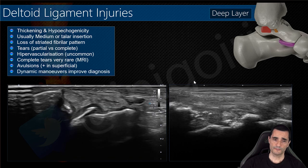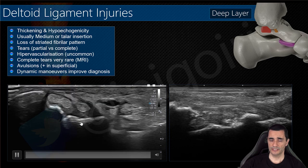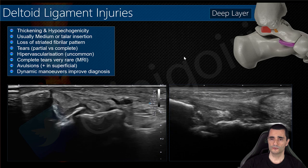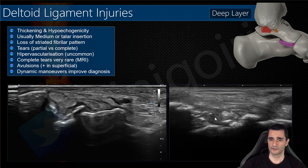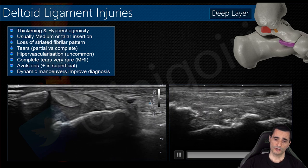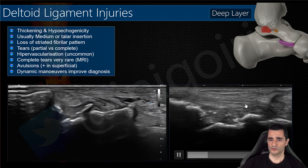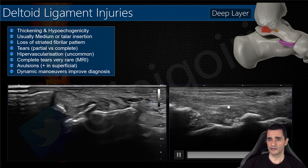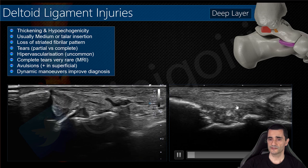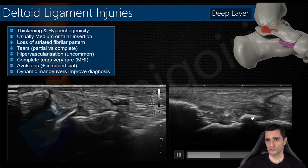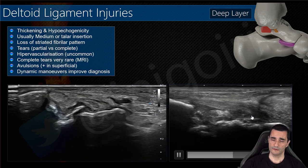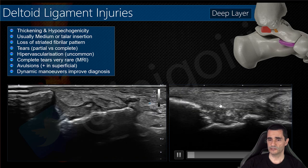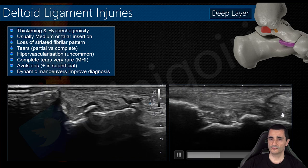Always perform dynamic maneuvers. For the posterior tibiotalar ligament, dorsiflexion is mandatory to obtain a good view. You can also perform plantar flexion to assess the anterior components — the tibionavicular and the tibiospring ligaments. Valgus maneuvers can help us distinguish the tibiocalcaneal components.